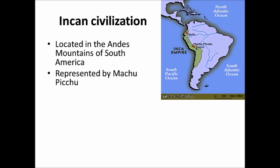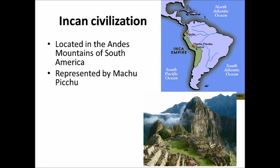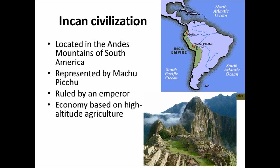In terms of their government, the Incas were ruled by an emperor with absolute power and very direct rule. The government would arrange marriages, citizens were required to have passes to travel, the government controlled when they harvested their crops, and they conquered people and forced them to adopt the Incan ways — total control by an emperor.